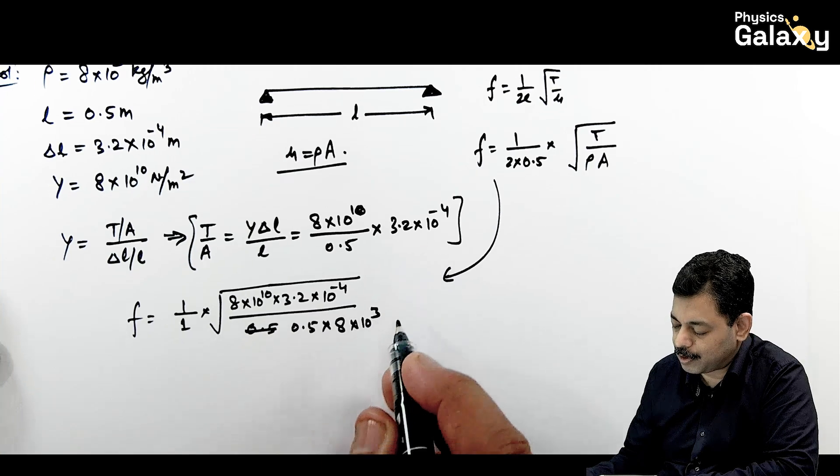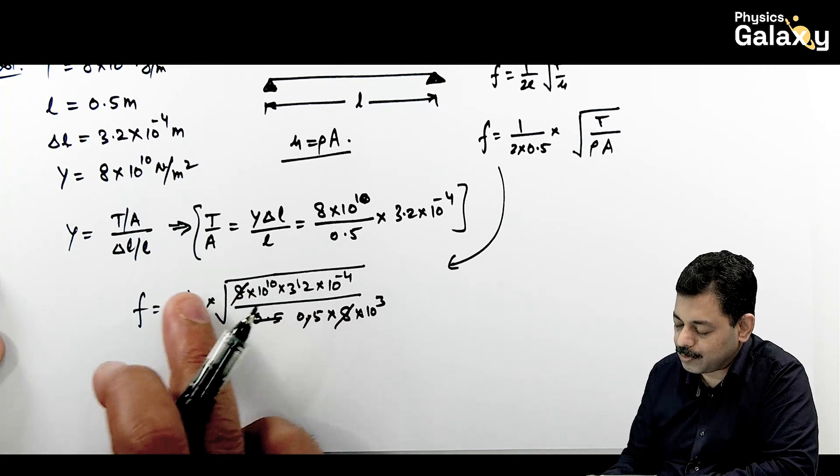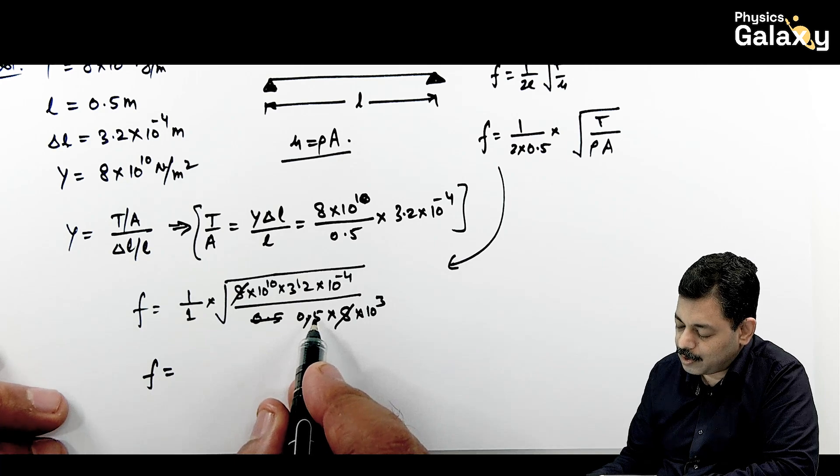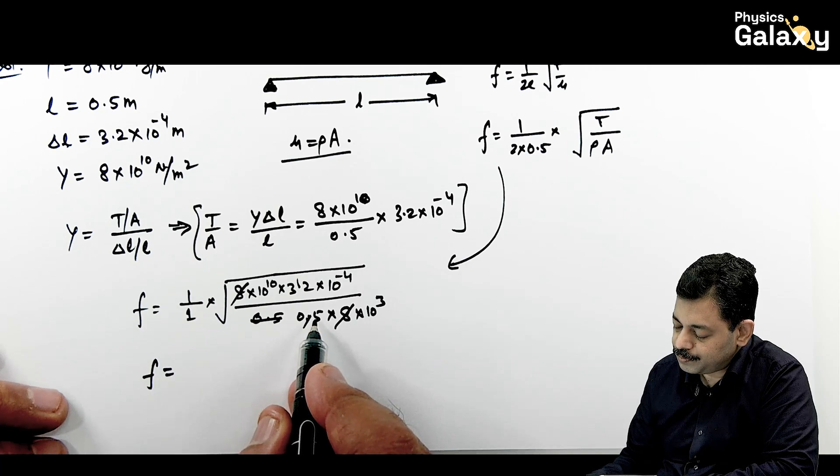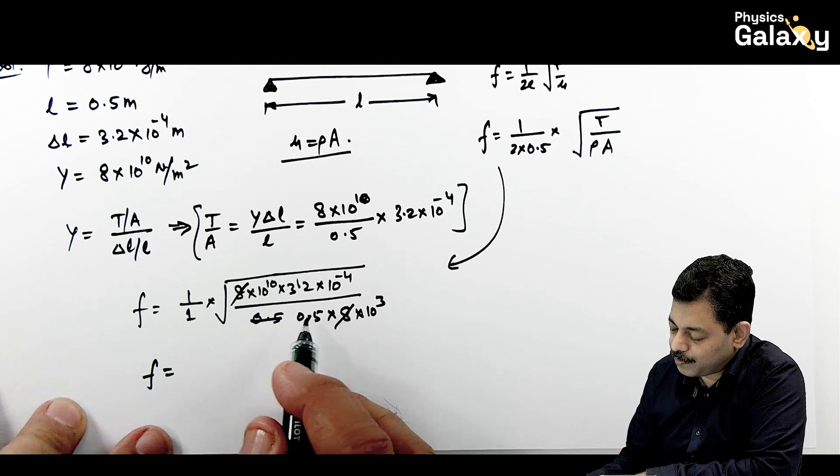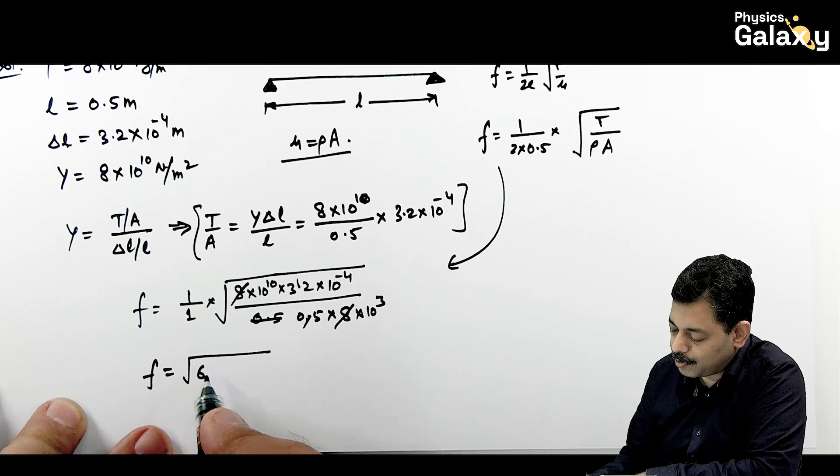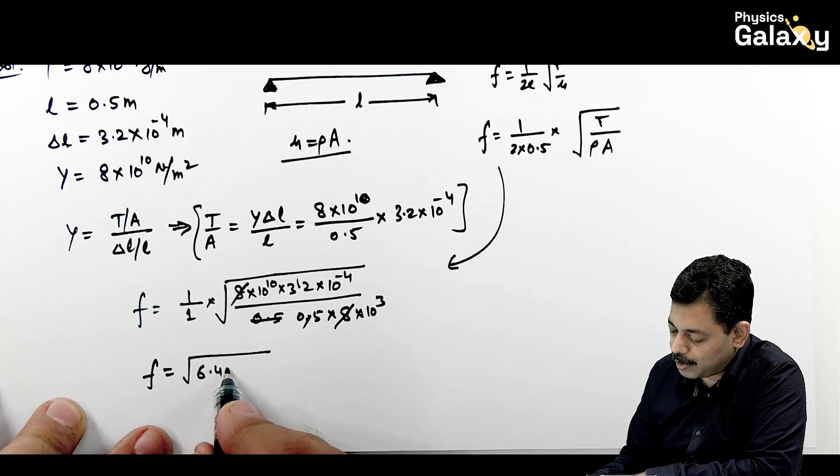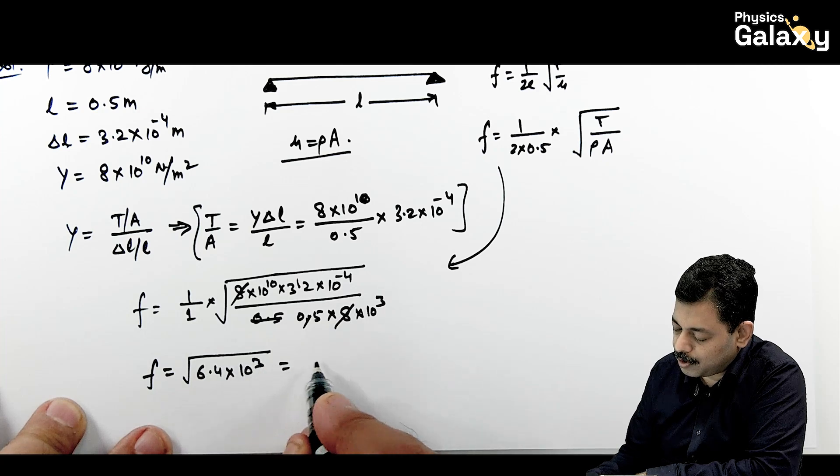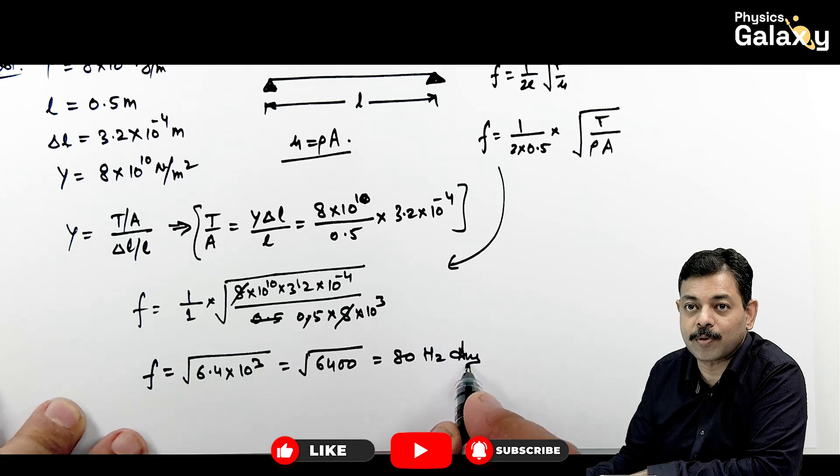So here 8 gets cancelled out, 0.5 decimal becomes 5. See what we are getting here: the fundamental frequency can be written as 32 by 5, comes out to be 6.4. So we can write it root of 6.4 multiplied by this is 10 to power 3, so it comes out to be root of 6400, or it is 80 Hz. That is the answer to this problem.